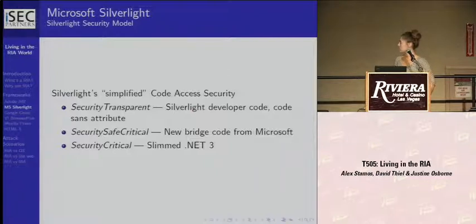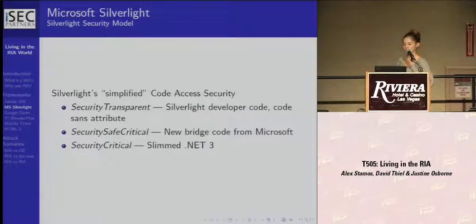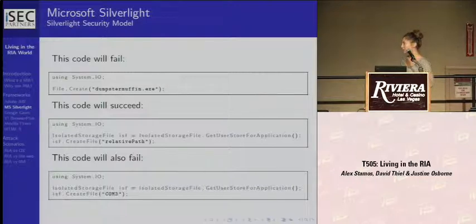Code access security is security based on code identity — your code gets different privileges depending on where it's from. If it's from the internet, it's going to have less privilege. Silverlight has simplified classic code access security so the developer can only write transparent code, and then they can call into critical code with security-safe critical APIs which Microsoft writes, signed with a Microsoft public key. So that's how the sandbox works. For example, in my Silverlight application I can't call file.create because that's critical code. A call through a safe critical API will succeed, as shown in the example, while a third call trying to talk to the modem will fail.